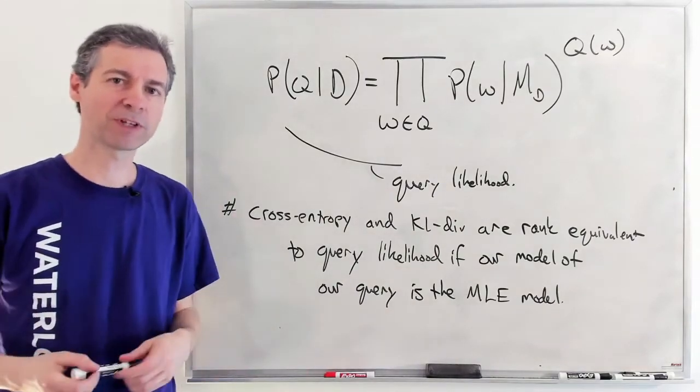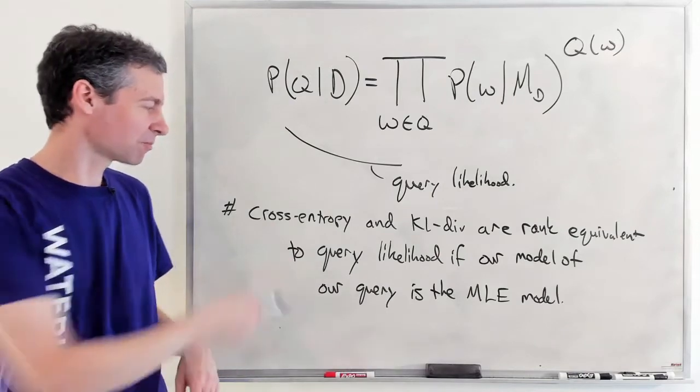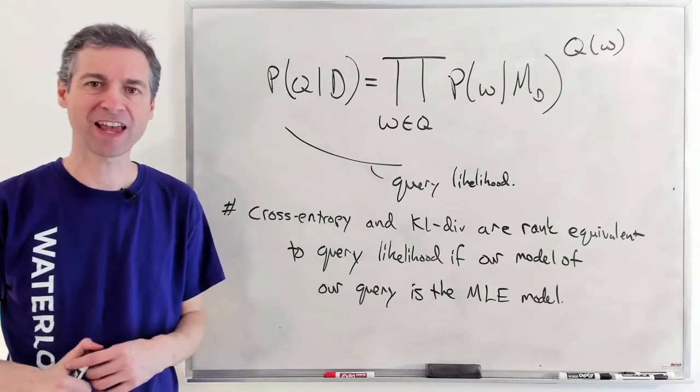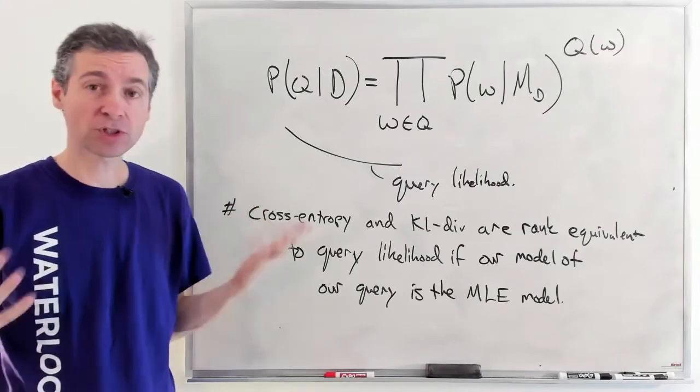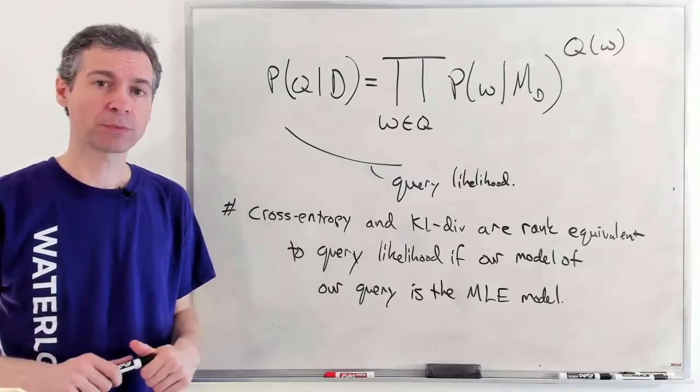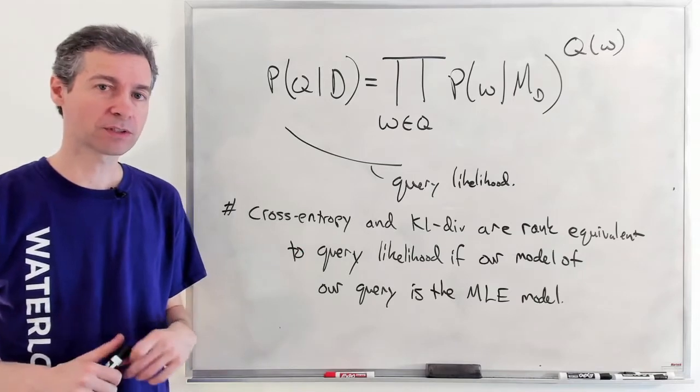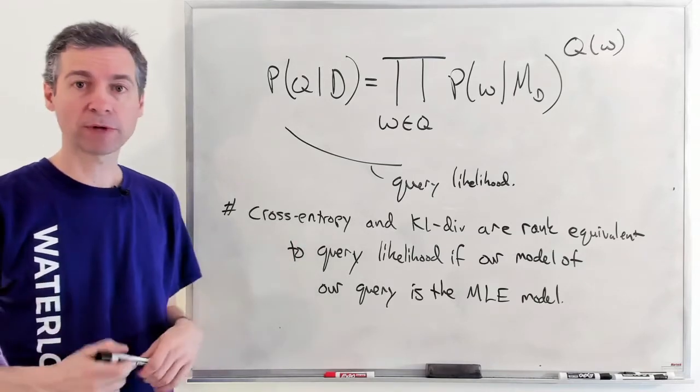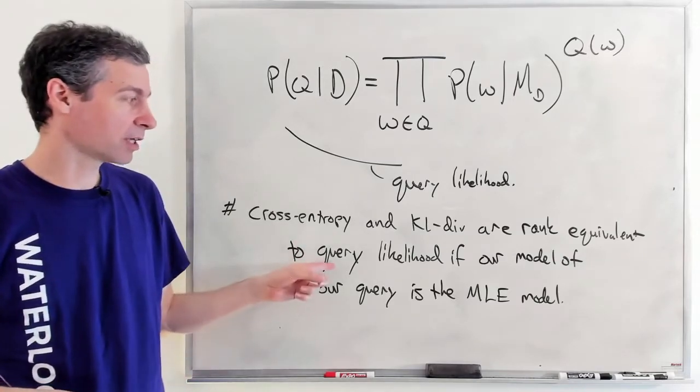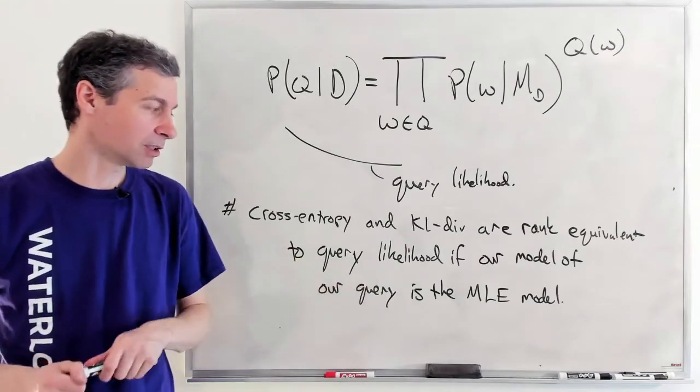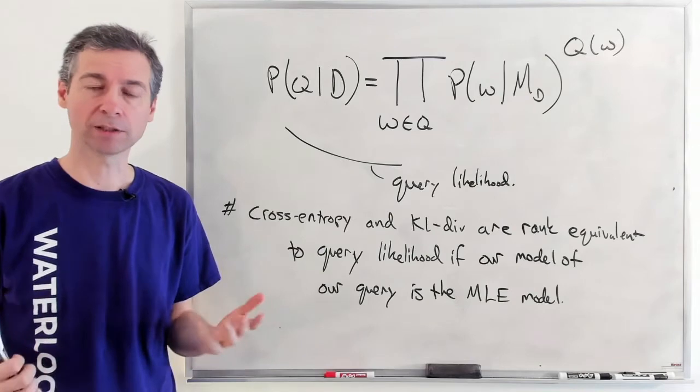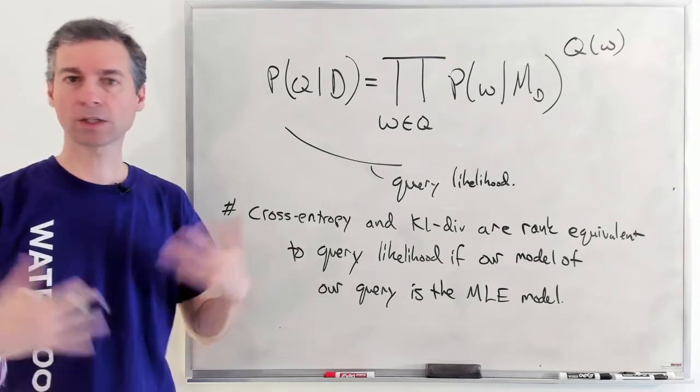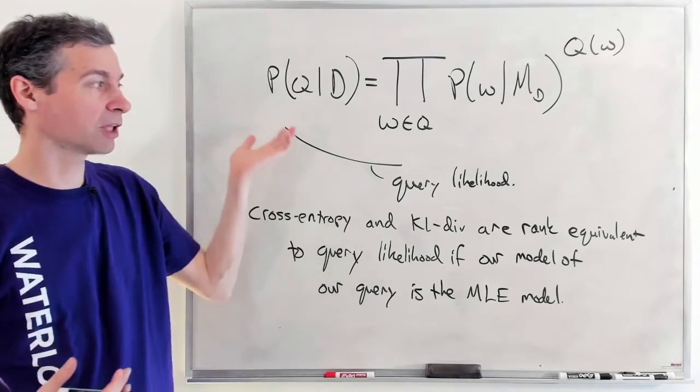All right, so picking up right where I left off, this is what I wanted to say that I didn't have in my notes. The third choice, cross entropy and the KL divergence, they end up being rank equivalent to query likelihood if our model of our query is the maximum likelihood estimated model. And so it all comes back then to query likelihood.